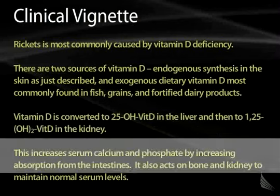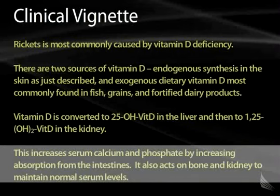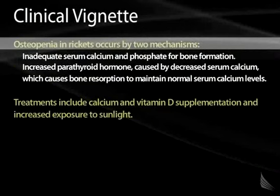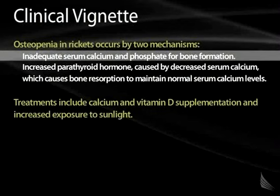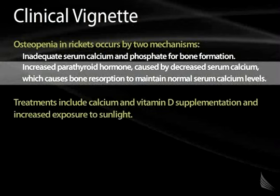The active form of vitamin D functions by increasing serum calcium and phosphate through increased intestinal absorption. It also acts on bone and kidney to maintain normal serum levels of calcium and phosphorus. The osteopenia in rickets occurs by two mechanisms: inadequate serum calcium and phosphate for bone formation, and increases in parathyroid hormone caused by decreased serum calcium. Parathyroid hormone acts on bone to resorb mineralized bone to maintain normal serum calcium, leading to active demineralization in addition to impaired bone formation.